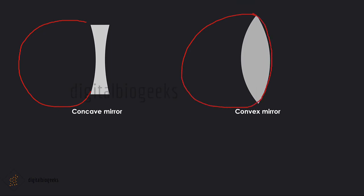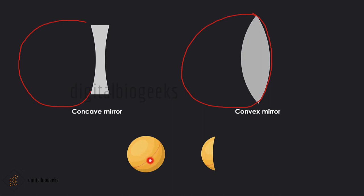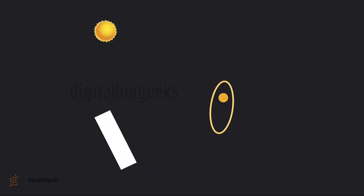To understand this better, let's take a rubber ball and cut it. We will get a small piece from the ball in which the inner side is concave and the outer side is convex. This piece is a part of the sphere wall. Similarly, curved mirrors are a part of spheres.